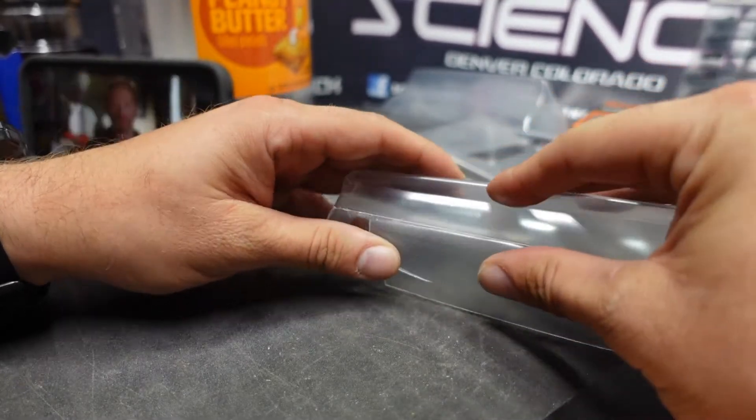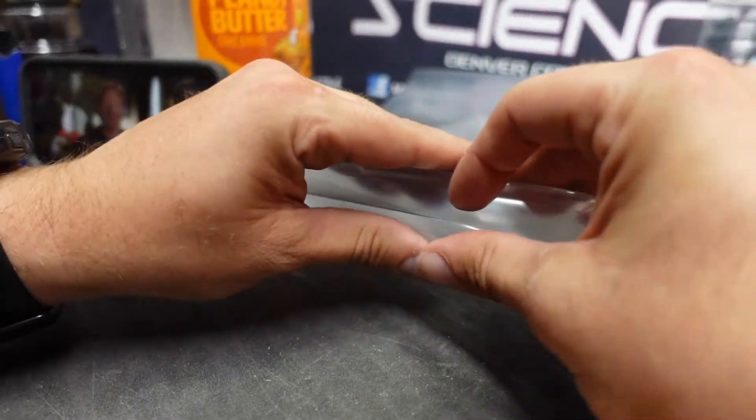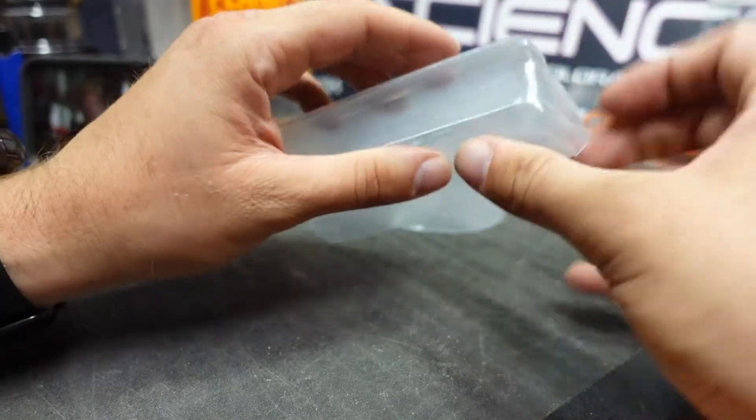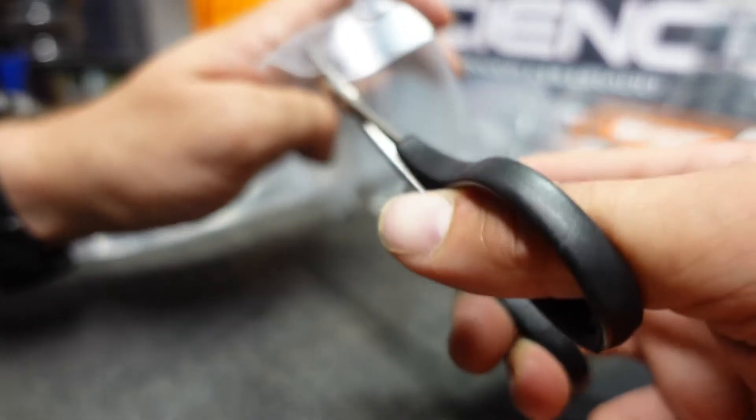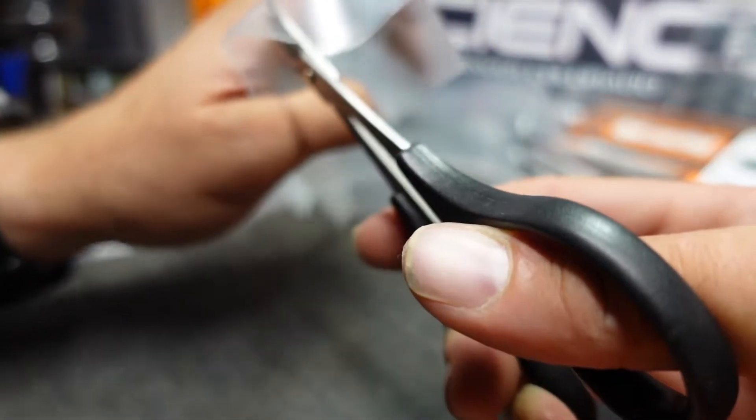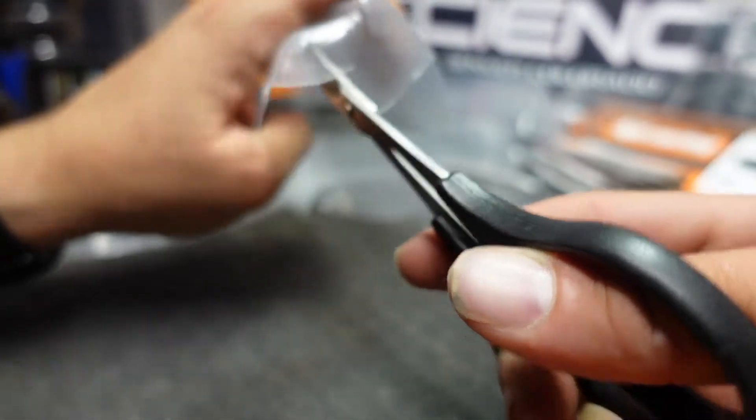Now with the line scored, you can bend and snap along the line. Be cautious and move slowly to ensure that your cuts fully penetrated. Here you can see I didn't complete a cut, so I came back and tidied it up with my Lexan scissors.